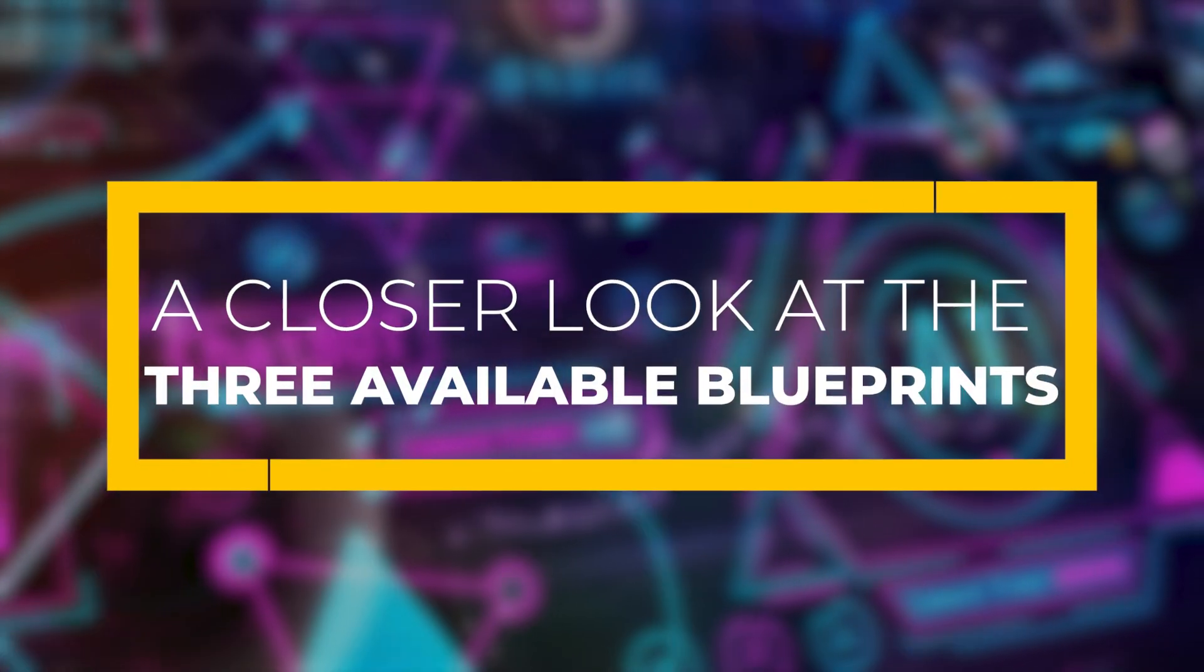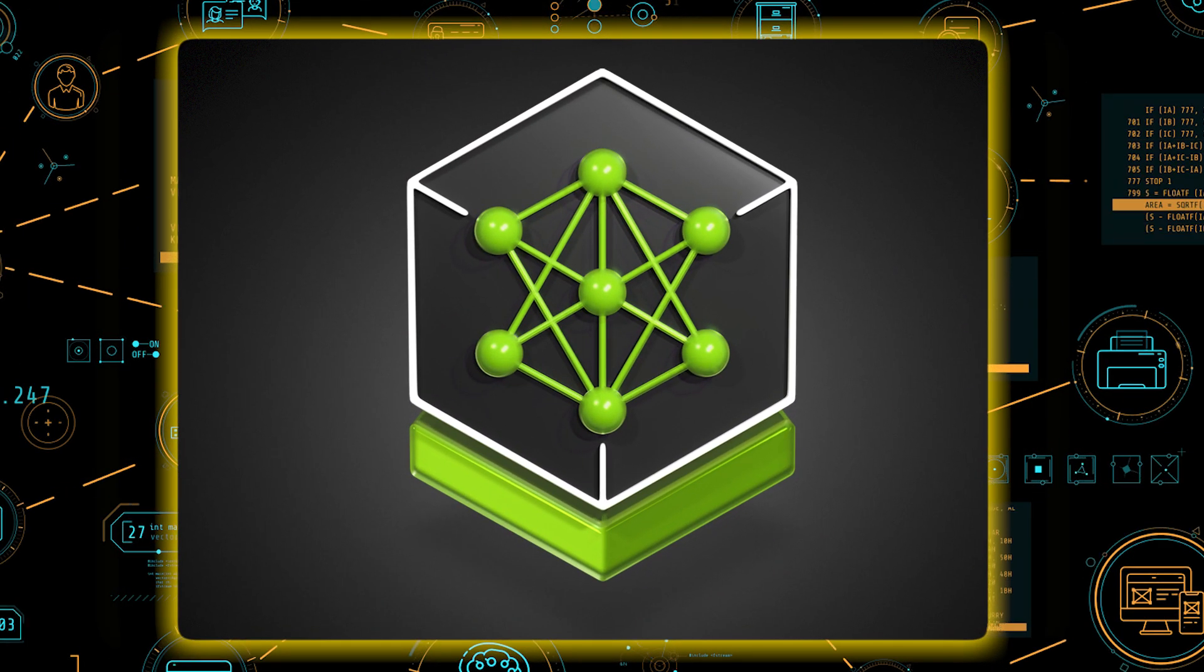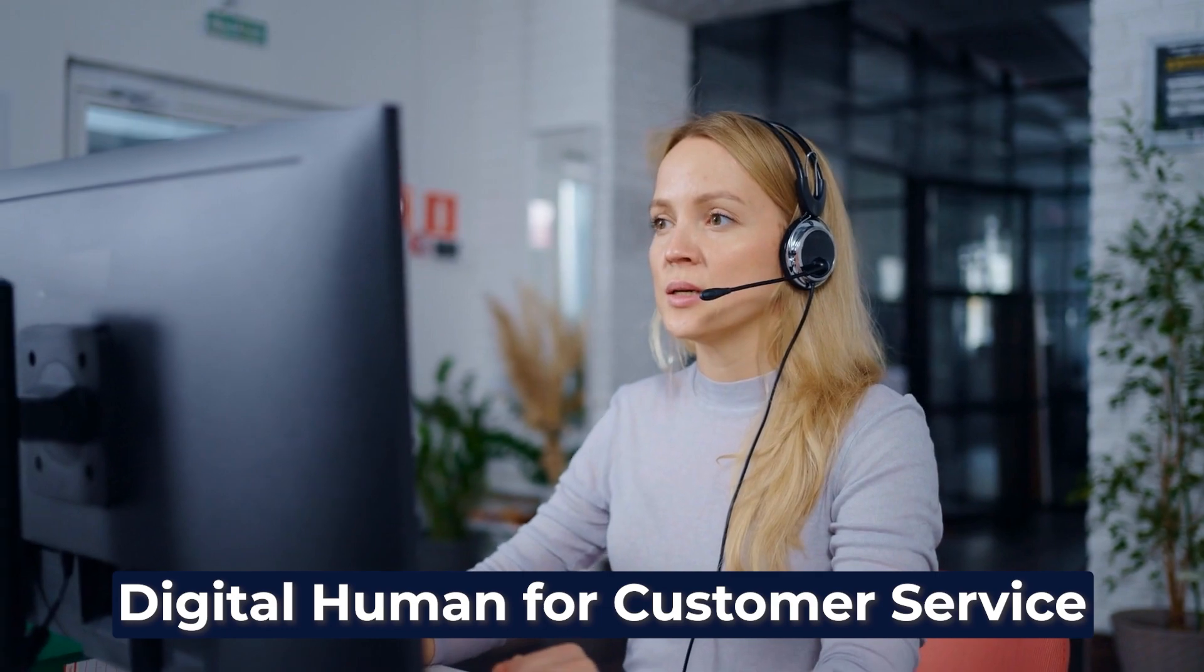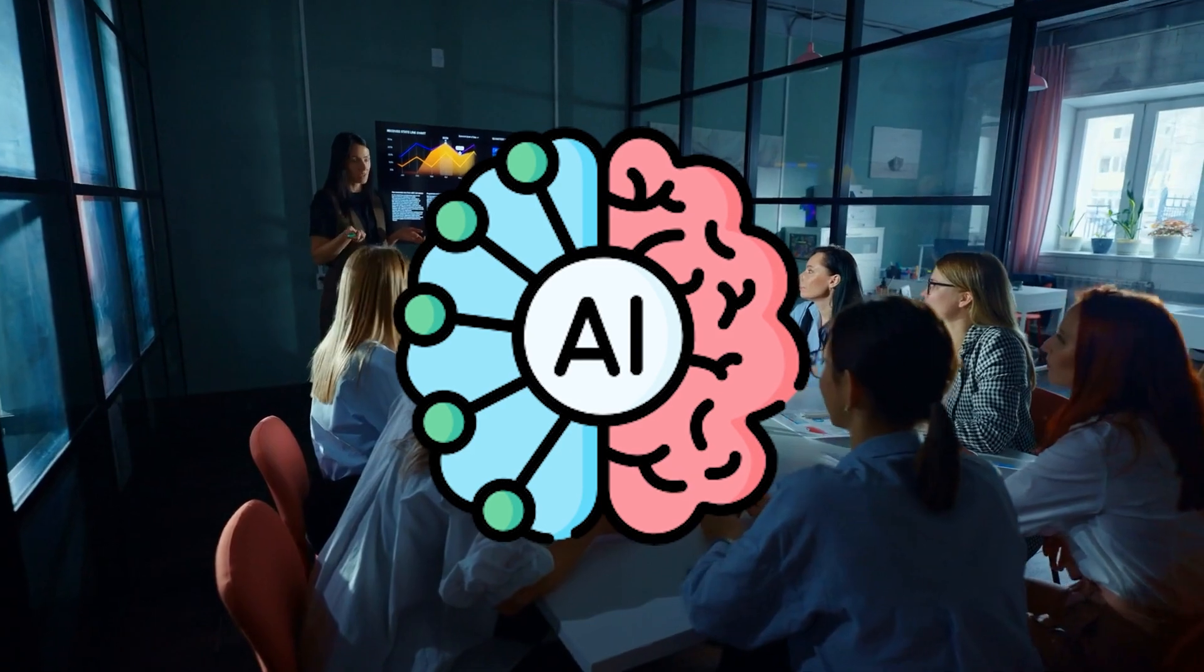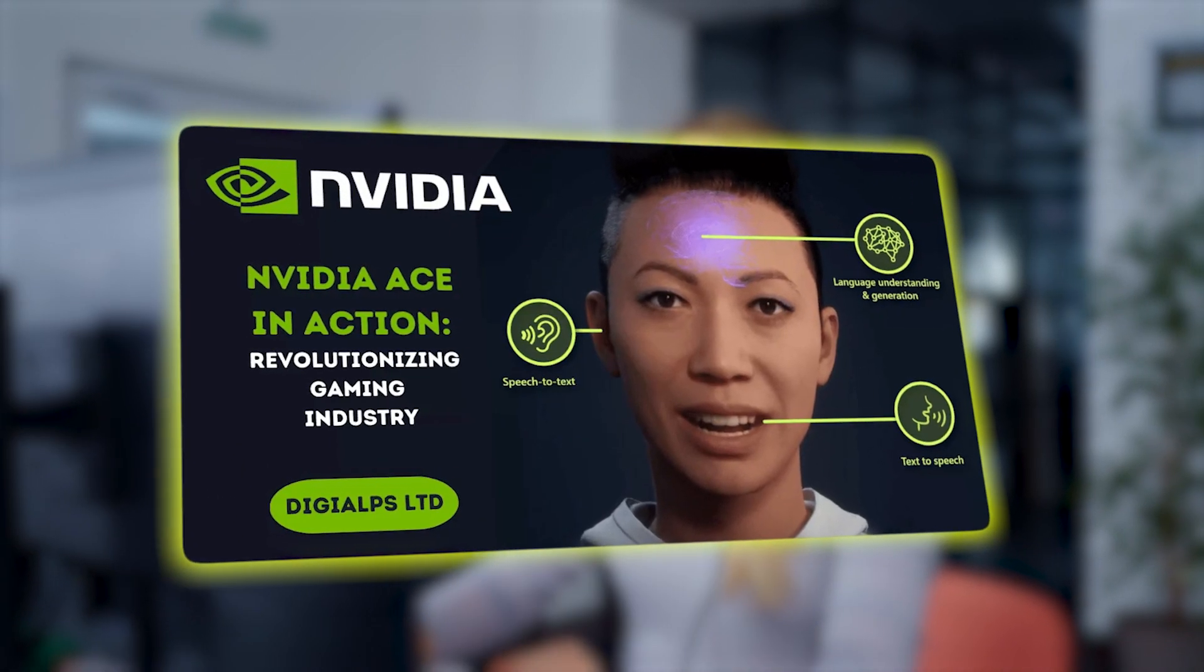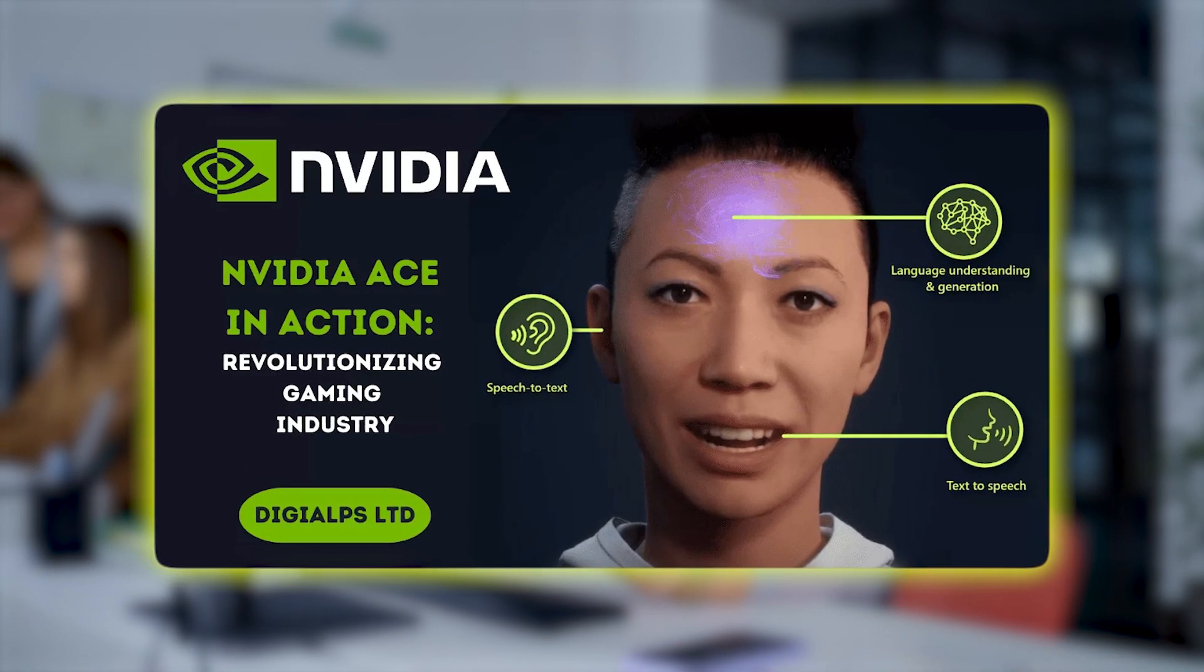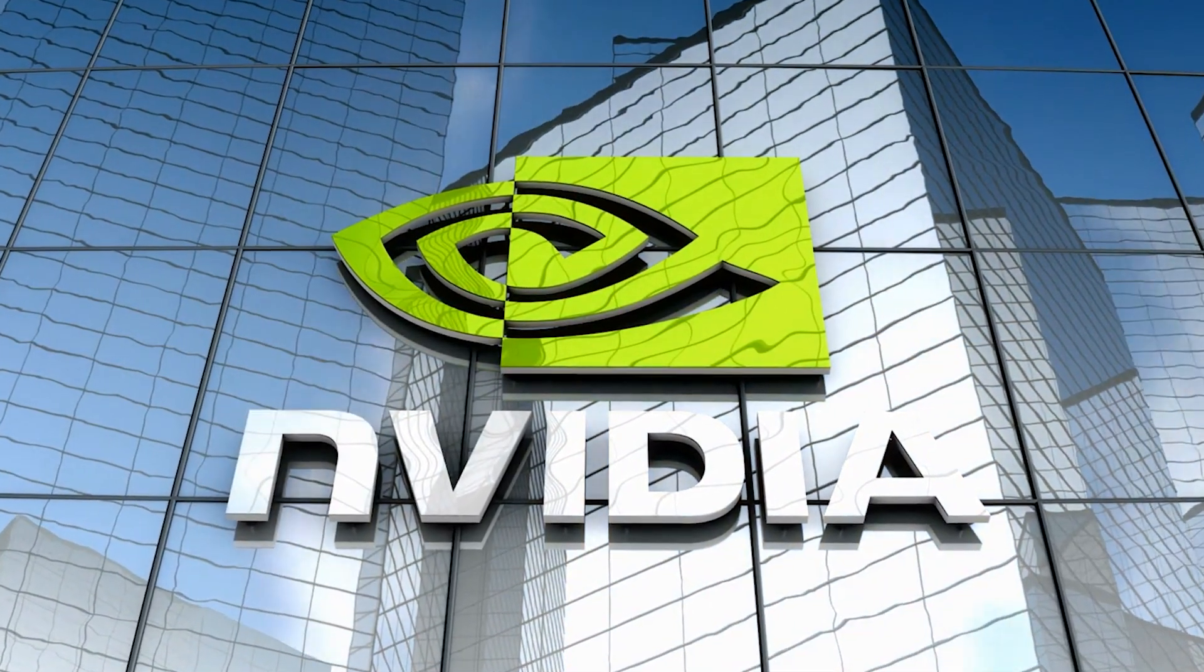A closer look at the three available blueprints. Now, let's take a closer look at the three blueprints currently available and see how they can be applied across different industries. First up is the Digital Human for Customer Service blueprint. This blueprint is perfect for businesses looking to enhance their customer service with AI. Imagine a virtual assistant that isn't just a voice on the phone, but a 3D avatar capable of engaging in real-time conversations with customers. Using tools like NVIDIA ACE, Omniverse RTX, Audio Two-Face, and Llama 3.1 NIM microservices, this blueprint allows companies to create lifelike digital humans who can interact with customers in a natural, intuitive way.